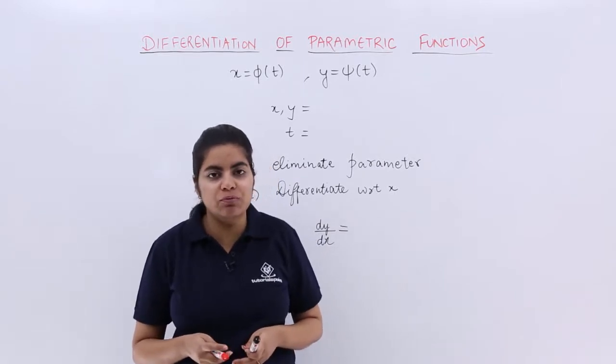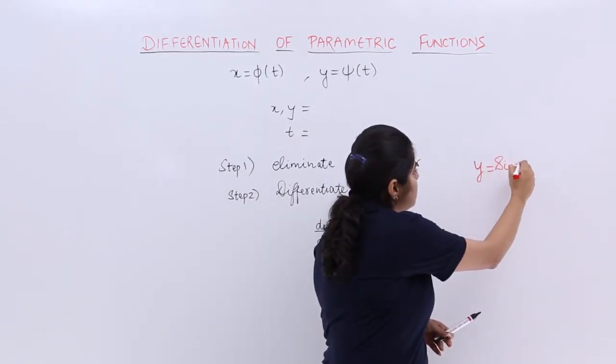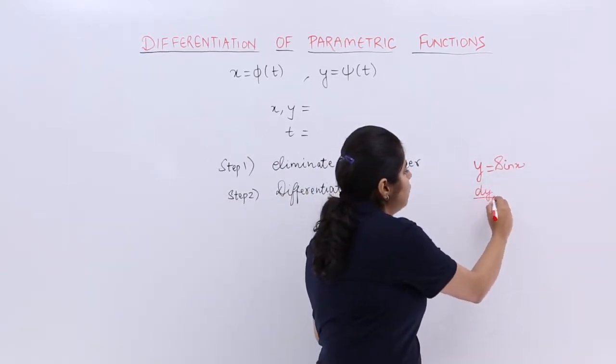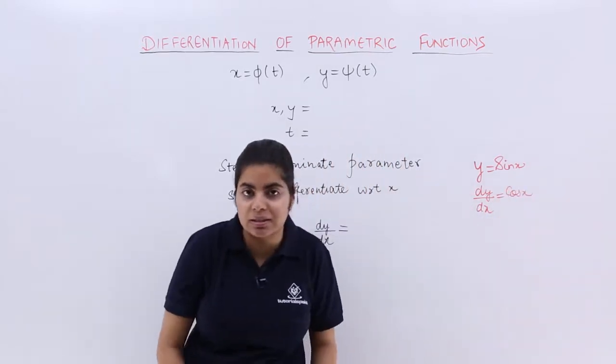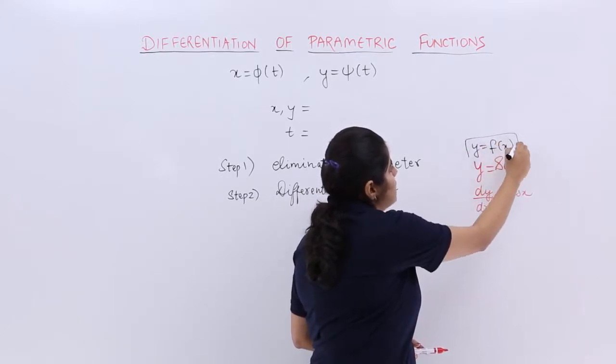Usually what used to happen was we would have been given a function, say y is equal to sin x, and we were asked to differentiate with respect to x. So I would have easily found out dy by dx is equal to cos x and that was the answer. That means my y was a function of x.